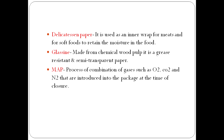MAP stands for Modified Atmospheric Packaging. It is a process involving a combination of gases such as oxygen, carbon dioxide, and nitrogen that are introduced into the package at the time of closure. By modifying the atmosphere inside the packet — for meat, vegetables, or other products — the condition of the product is maintained. It is a type of processing technique. CAP, or Controlled Atmospheric Packaging, is somewhat similar.